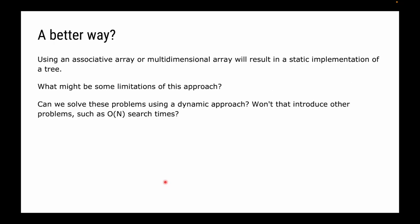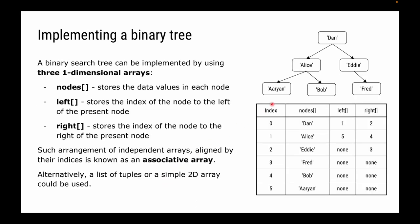Is there a better way? Using an associative array or multi-dimensional array results in a static implementation of a tree. The limitations include: every time you want to add a new node, you need to allocate more space in memory. An array is a contiguous block of memory, so if you want to add just one more node, you need to reallocate space for each of the three arrays that is one memory cell bigger, copy all the data over, and repoint your identifiers. This is really inefficient for adding new nodes — similar to how it would be inefficient to add new nodes to a graph represented as an adjacency matrix.